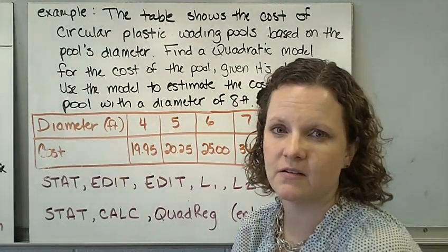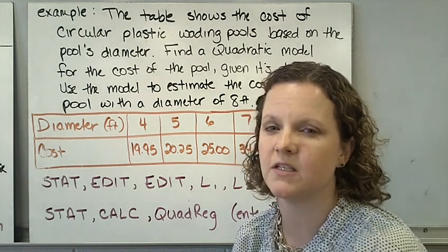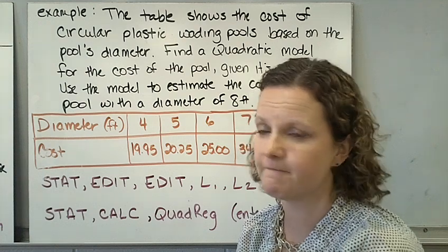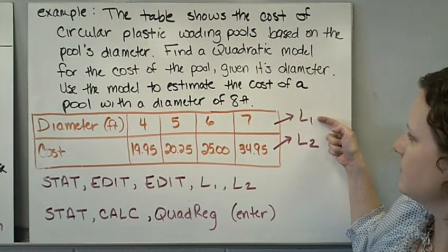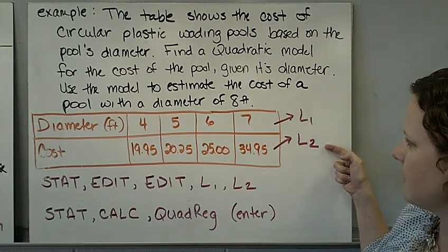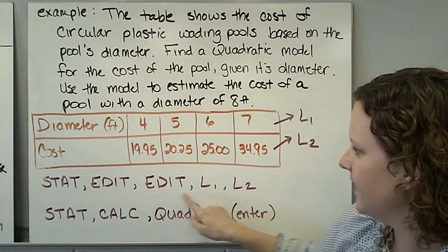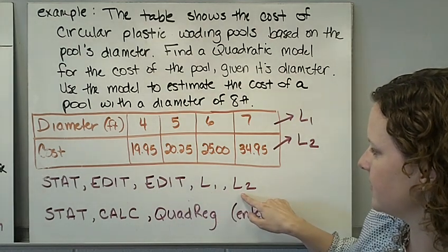So this is the data that's given to us. We're going to use that statistical function of your calculator and I've written out all the steps that you need to do. If you can go ahead and get out your calculators and work along, that would be great. So our first row is going to be L1, our second row is going to be L2. You're going to do STAT, EDIT, EDIT, and list 1 and list 2. Enter the data in for list 1 and list 2.